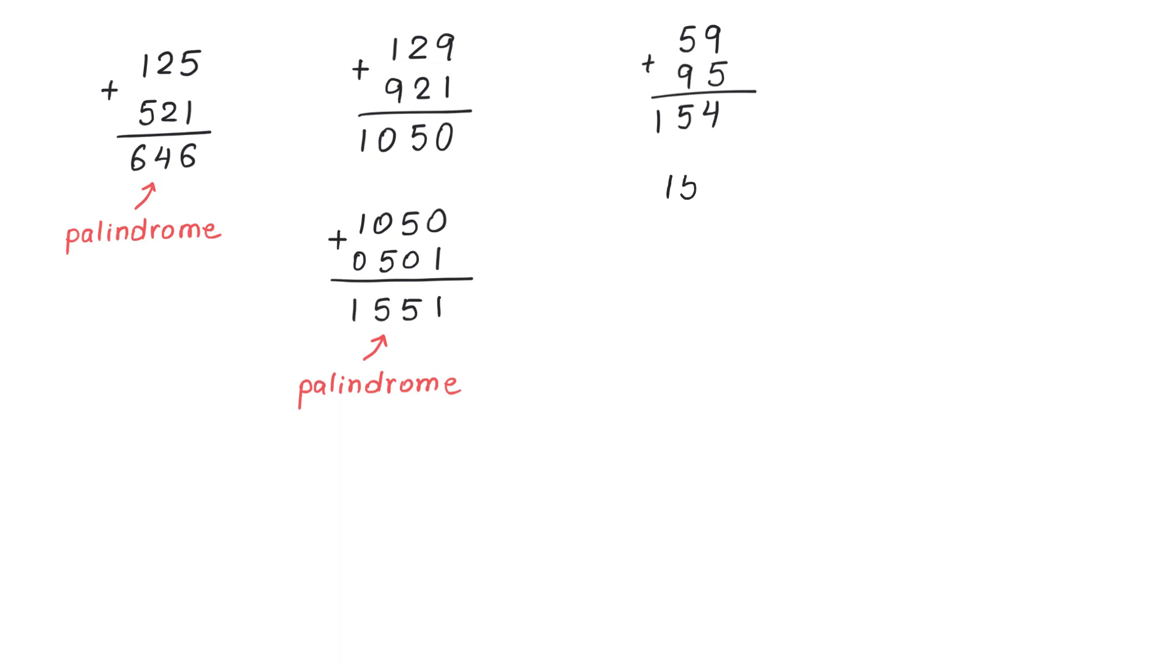Therefore, let's take 154 and add 451. The result here will be 605. So we still don't have a palindrome. Therefore, let's continue with the same steps.